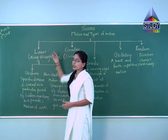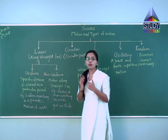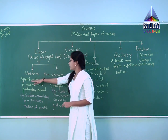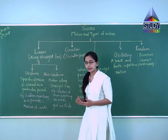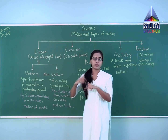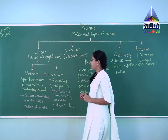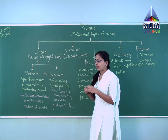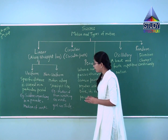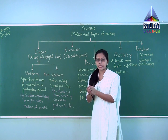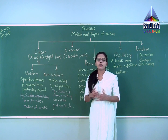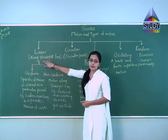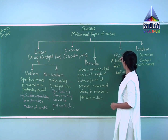Let us summarize: linear motion is motion along a straight line. Uniform linear motion is motion in which specific distance is covered in a particular period — examples include soldiers marching in a parade and motion of ants. For non-uniform linear motion, the motion is along a straight line but equal distance is not covered in equal time. Examples include a man walking on a road and a girl on a slide whose speed increases continuously while coming down.